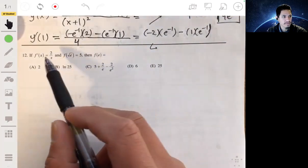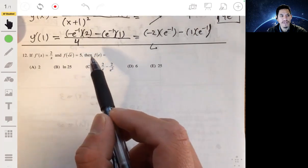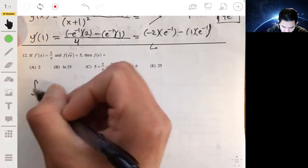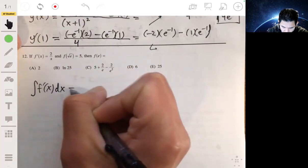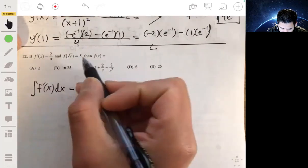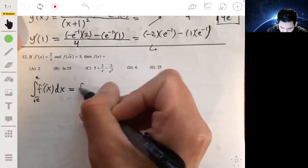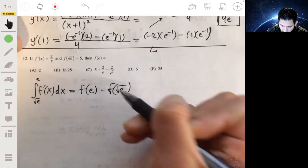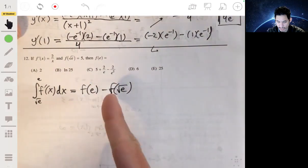All right, 12. We have the derivative of f being equal to 2 over x, and f of √e equals 5, then f(e) is. Okay, so the key here is to recognize that when you integrate the derivative, you're going to get f(x). So if we're integrating, so let's go from √e to e, this will be f(e) minus f(√e). So we're going to use this idea to define what f(e) would be.